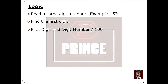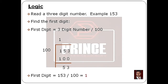For example, we divide 153 by 100. For 153, 100 goes one time, so 1 times 100 is 100, and the remainder is 53. So 1 is the first digit. If we separate the first digit from the 3-digit number, we divide the 3-digit number by 100 — dividing 153 by 100 gives us 1.